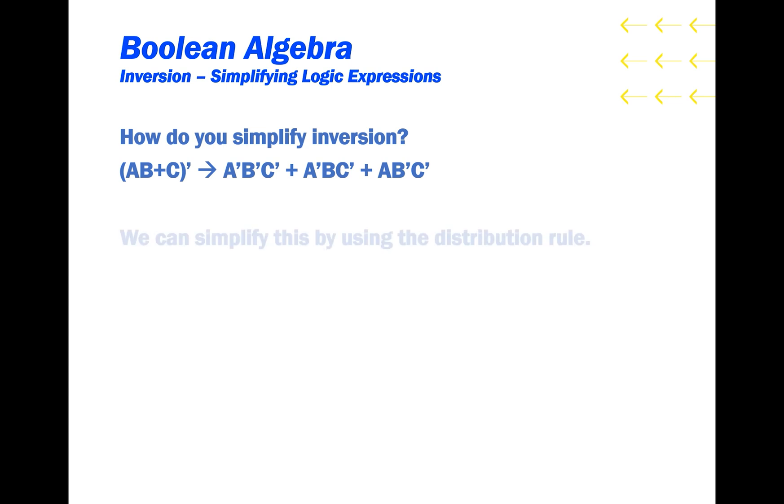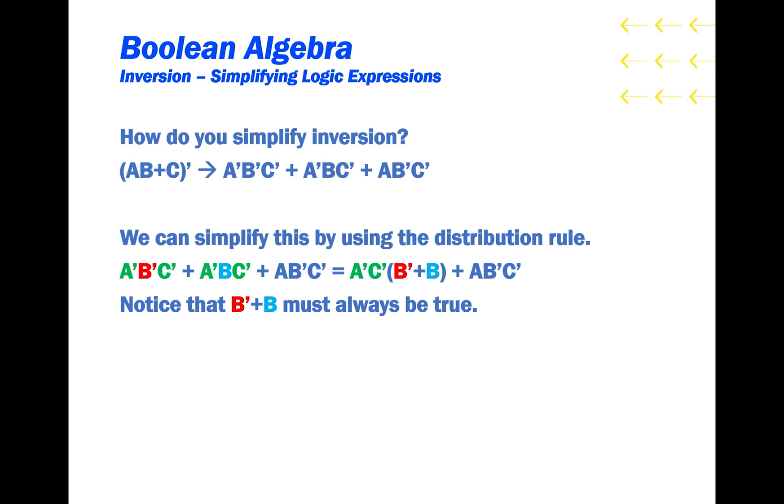Now we just need to simplify this expression. And we can simplify by using the distribution rule. Here notice that the variables highlighted in green are shared between the two terms, and can therefore be pulled out of the OR operation like so. Also remember that B prime or B will always evaluate to be true, and therefore our expression A prime, C prime, and B prime or B can be simplified to A prime and C prime and 1. Also remember that if one of the inputs to an AND gate is 1, then the output will only depend on the other variable, and therefore this can also be simplified to A prime and C prime.